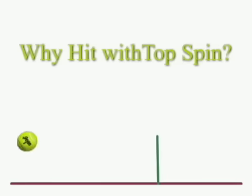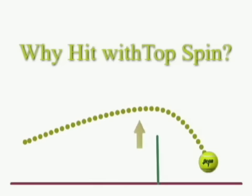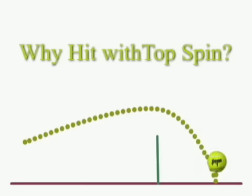Why would we want to hit with topspin? If you hit with topspin, the ball at a higher trajectory can go over the net at a higher distance, but yet still tend to come down into the court, stays in play, and then you have an added advantage of once it does hit the court of it bouncing up high to the person's shoulders, which makes it a lot harder ball to hit.